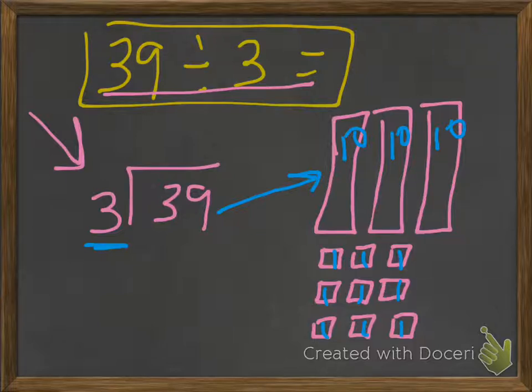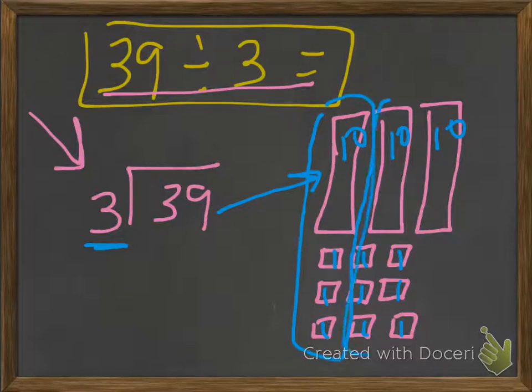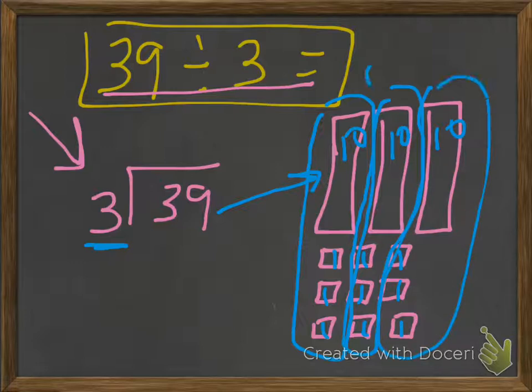Well, it's really set up already. If we look at this equally we can have three groups right here: group one, group two, group three. And each group has thirteen—one ten and three ones.